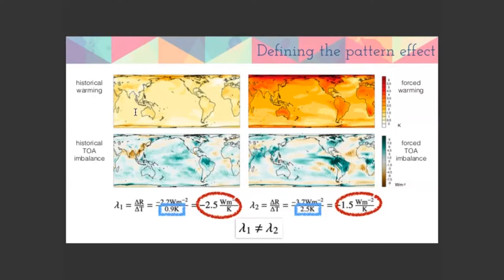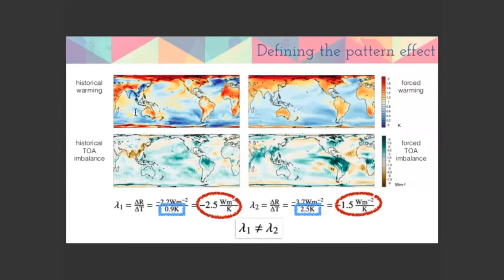In a nutshell, that is the pattern effect — feedbacks are not constant and change through time. This could in principle be due to the temperature range over which we calculate feedback, since feedbacks might be temperature-dependent. But for small temperature changes, this effect can be assumed very small. What people have found over the last decade is that the pattern of surface temperature sets the radiative feedback. The pattern maps show colors ranging from zero to two, where blue means warming less than the global average and red means more than the global average — by construction the average is one.